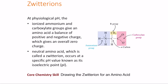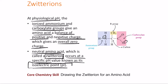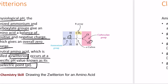At physiological pH, the ionized ammonium and carboxylate groups give the amino acid a balance of positive and negative charges, resulting in an overall zero charge. This is called a zwitterion — a neutral amino acid — and it generally occurs at a specific pH value called the isoelectric point, or pI.